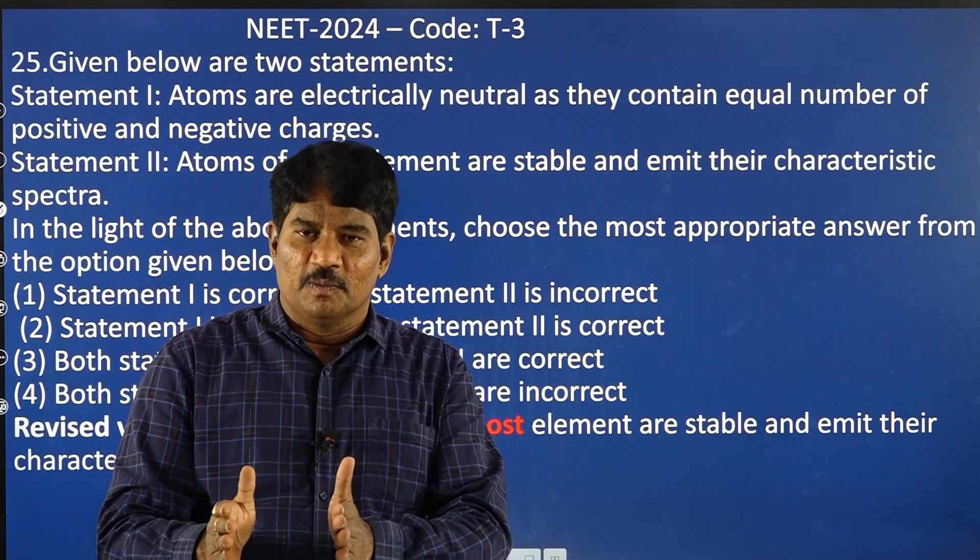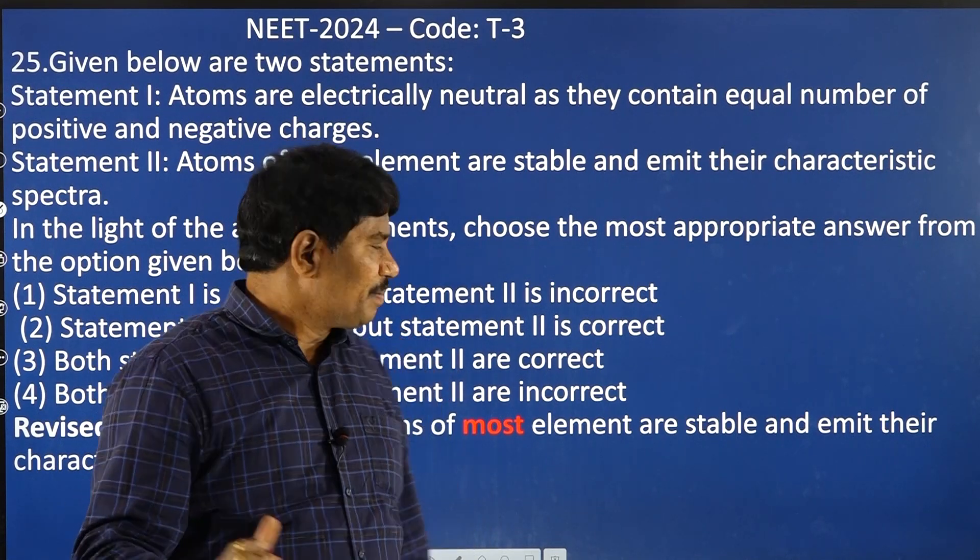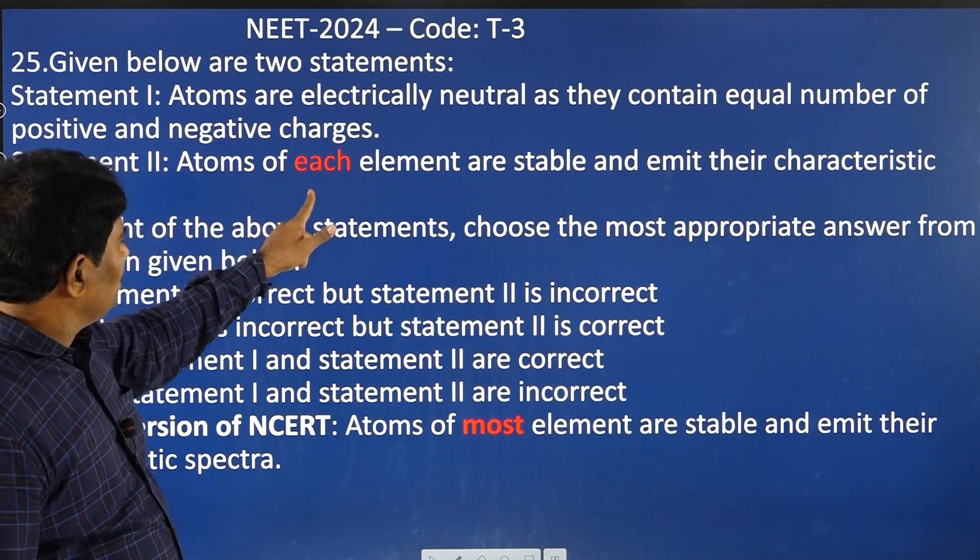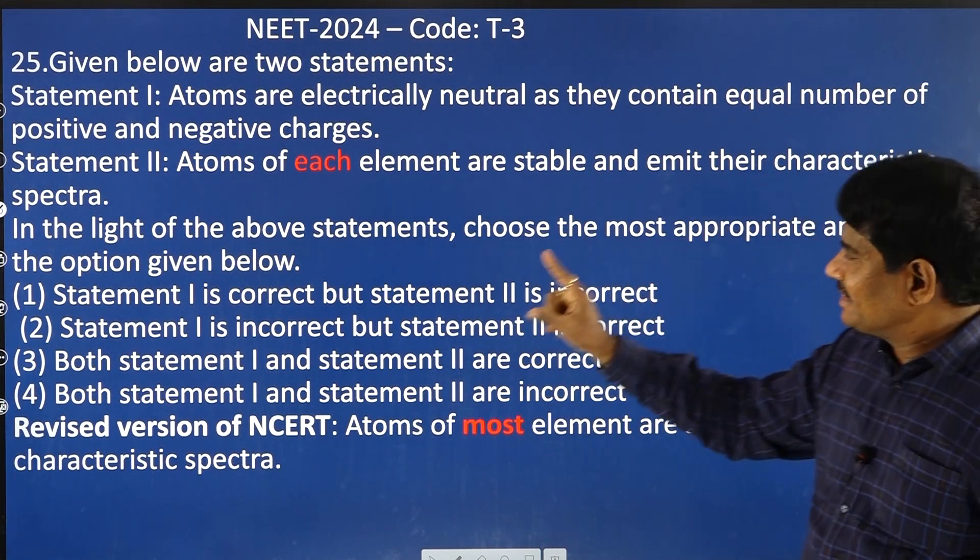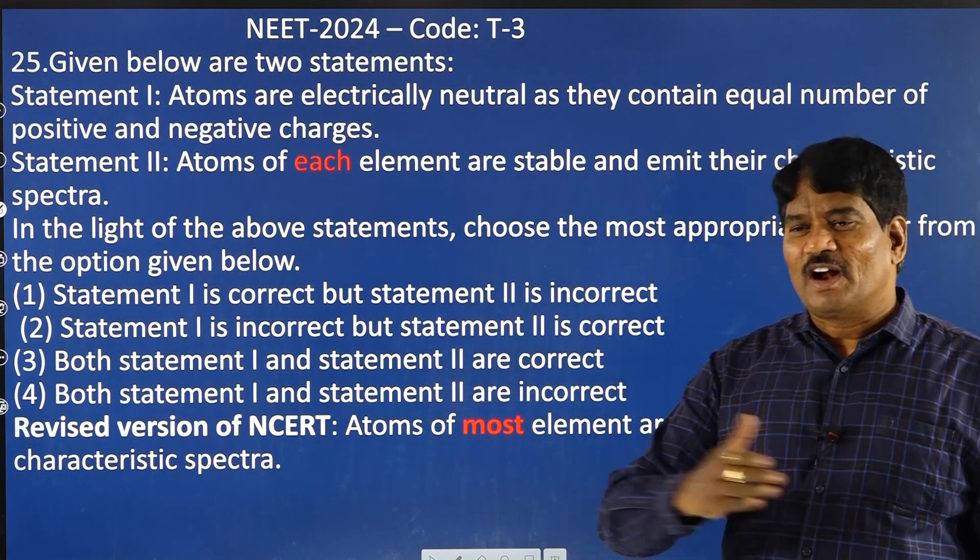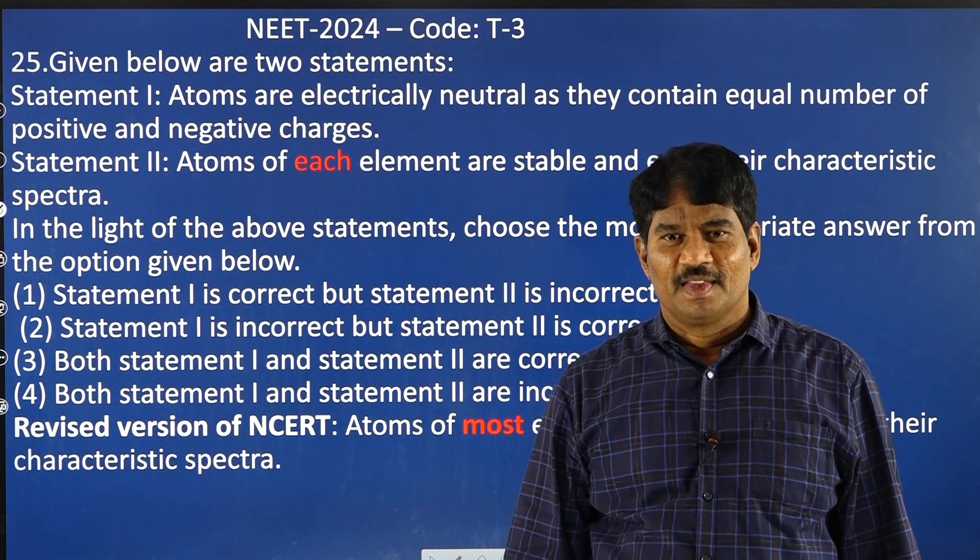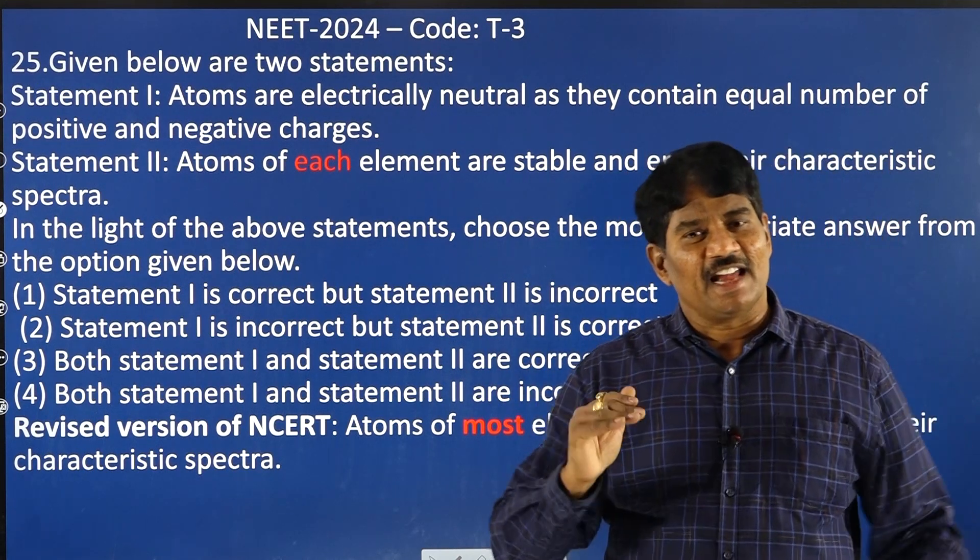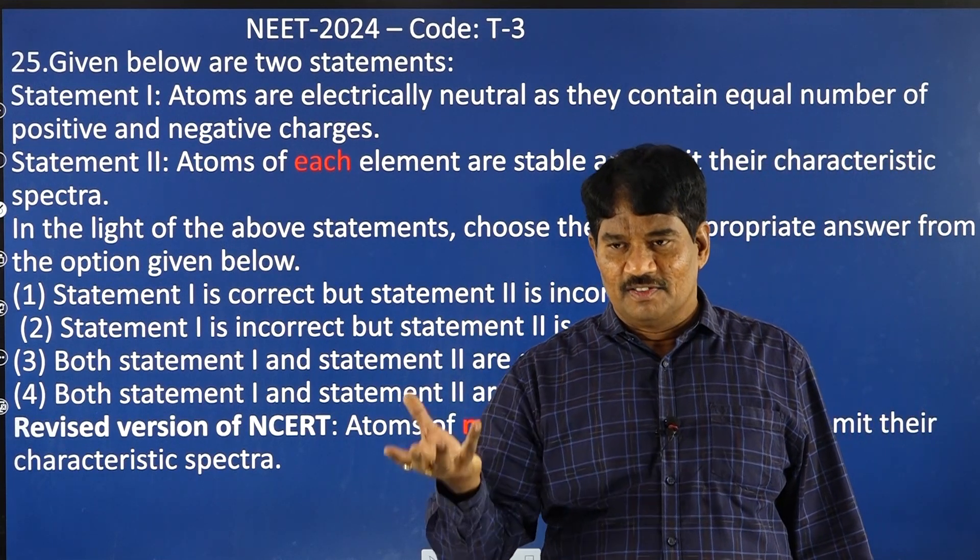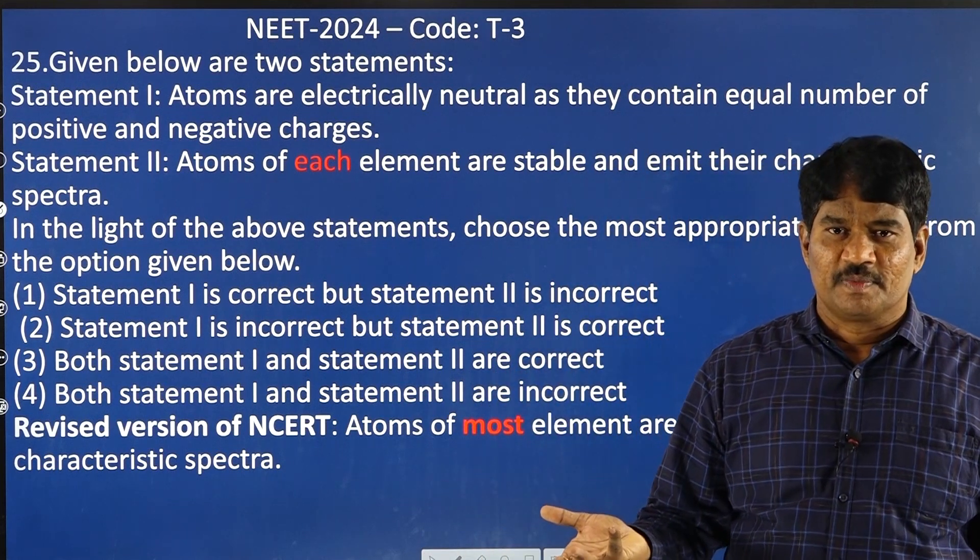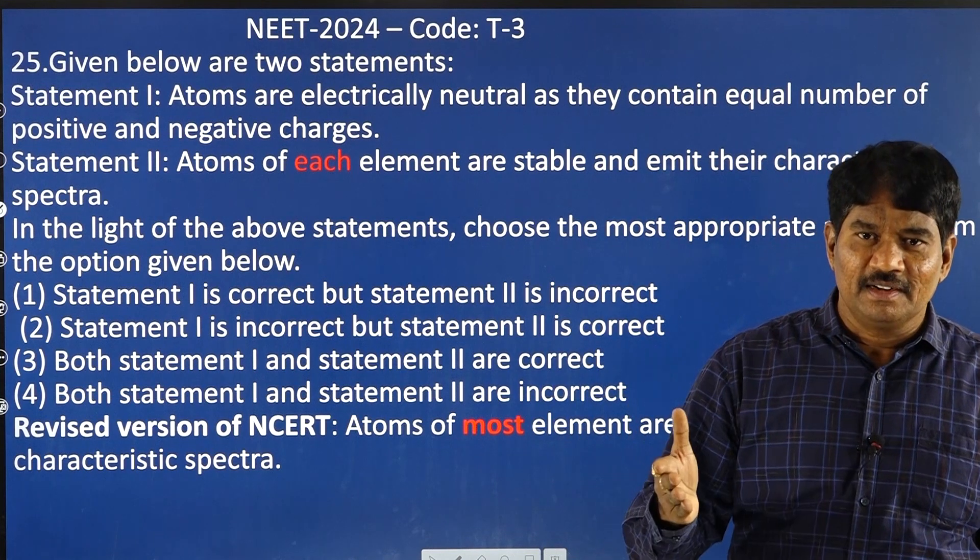Till 2022, in the summary of chapter atoms, they have mentioned that atoms of each element are stable and emit their characteristic spectrum. Generally, after the 10th class, most of the students will buy the two years of NCERT books and they will prepare from those NCERT books. But once the NCERT revised the version, then naturally we need to look into it. That is practically, but theoretically, it will not happen in many cases.